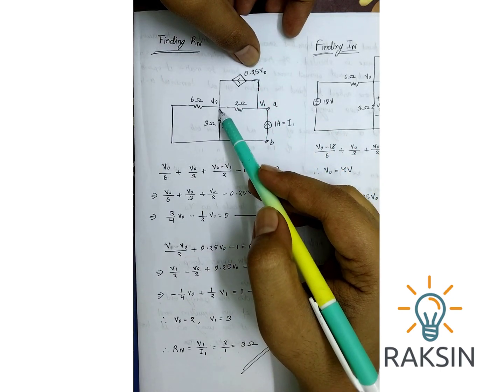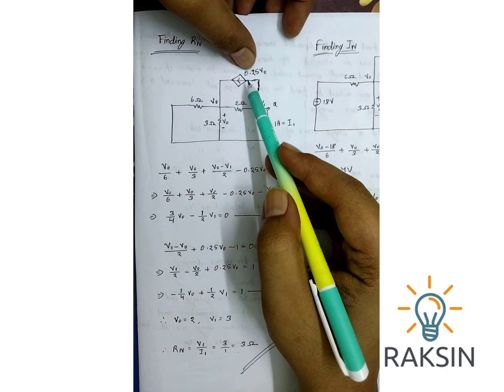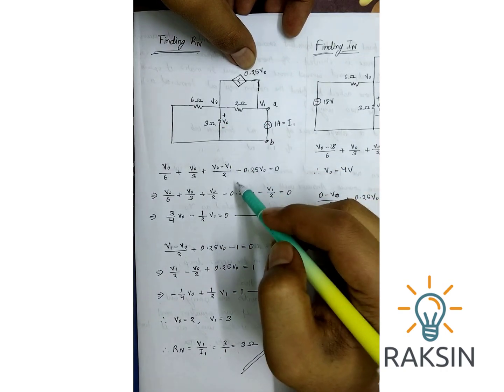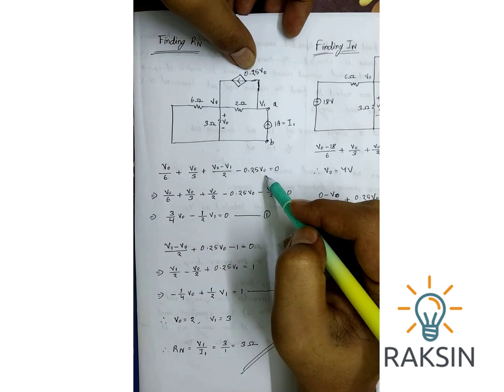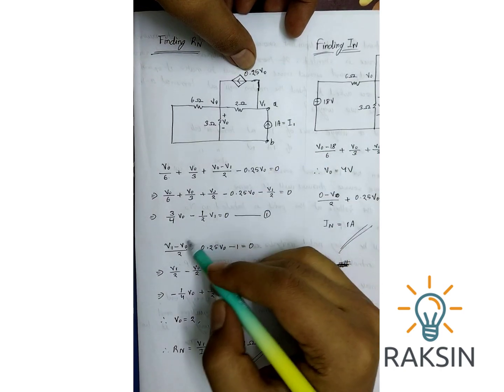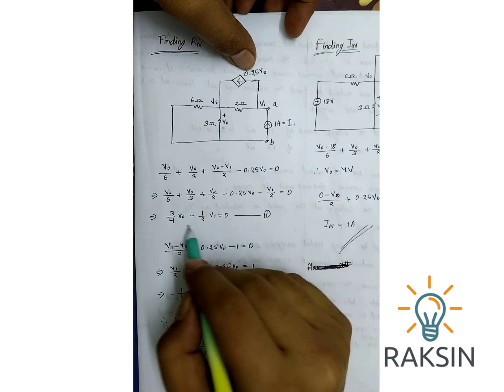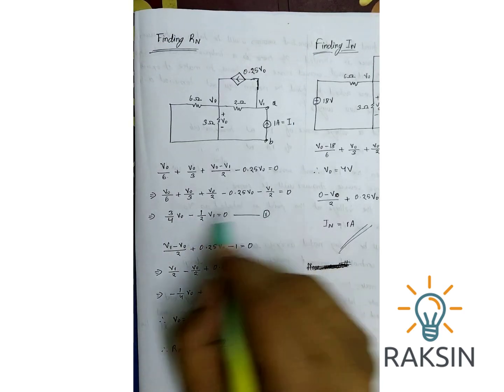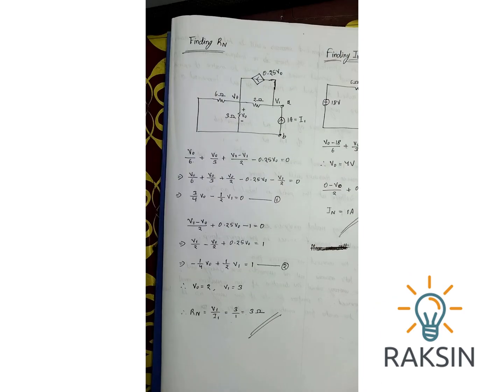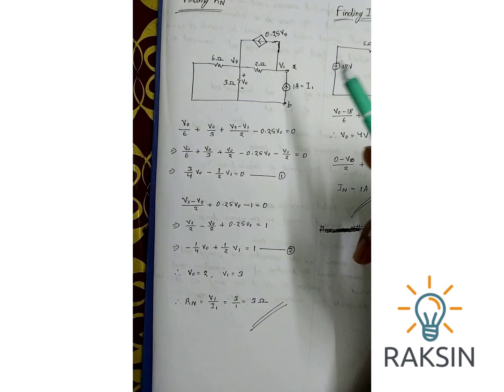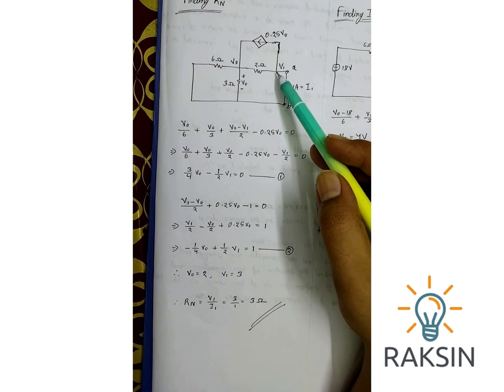This current is actually going into this node, that's why we have to write it as minus 0.25V0. We will find this equation after doing some calculation here.